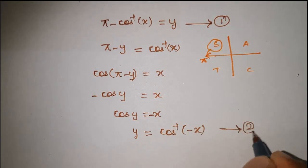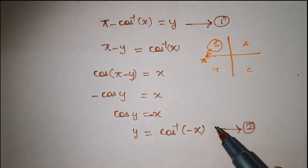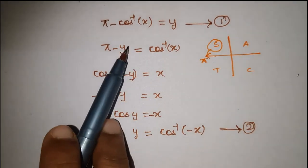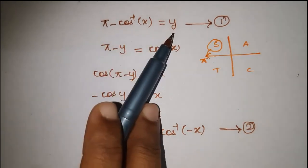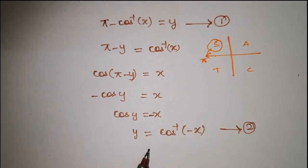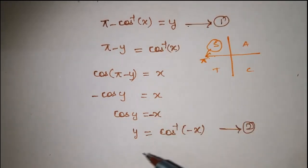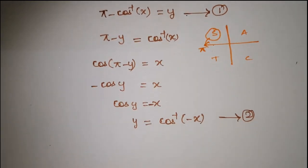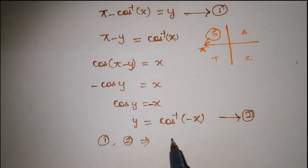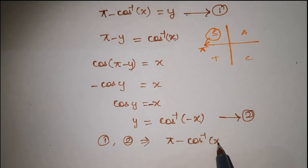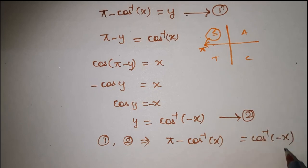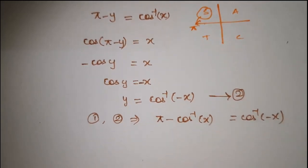Comparing the first equation and the second equation: first equation gives pi minus cos inverse x equal to y, and second equation gives y equal to cos inverse of minus x. Both are the same. Hence, by equations 1 and 2, we get pi minus cos inverse of x is equal to cos inverse of minus x. Therefore, hence it is true.